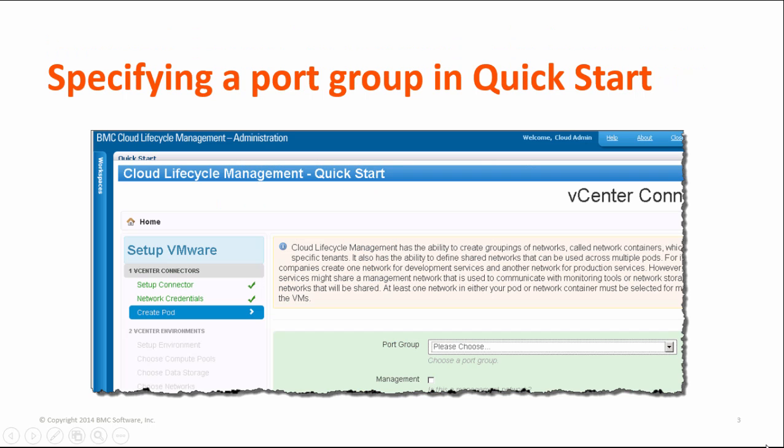When defining a network for an environment in QuickStart, you can now select a specific port group. In earlier releases, you selected a VLAN, which allocated all of the port groups associated with that VLAN.